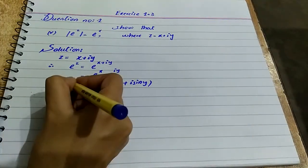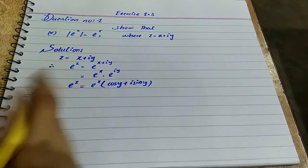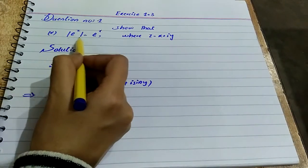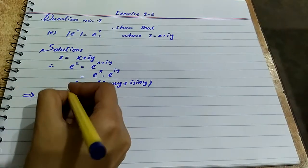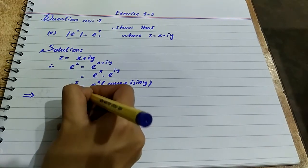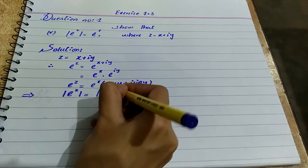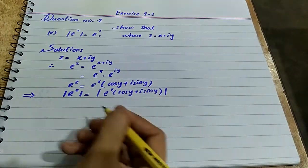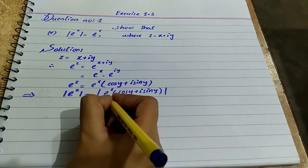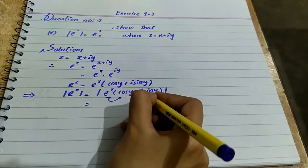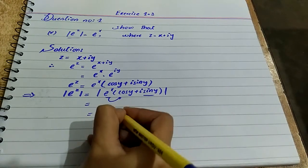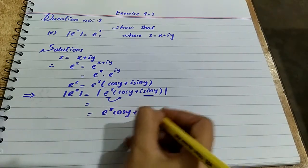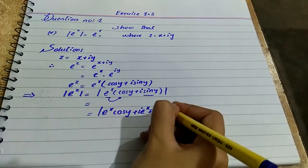Now, the next step: this implies we take modulus on both sides. Why? Because we have to prove |e^z| = e^x. So we take the modulus of e^z equal to the modulus of e^x multiplied by (cos y + i·sin y). We simplify by distributing e^x into both terms, giving e^x·cos y + i·e^x·sin y, and this is the modulus.